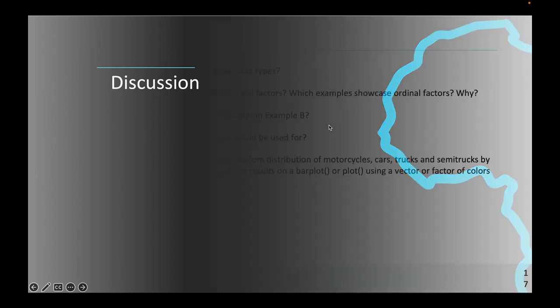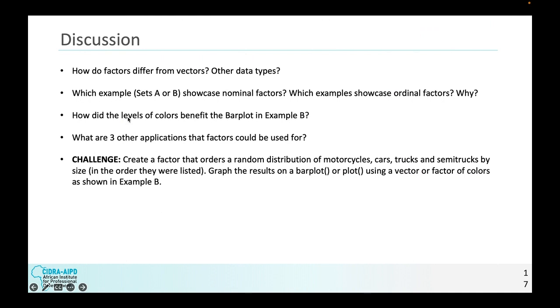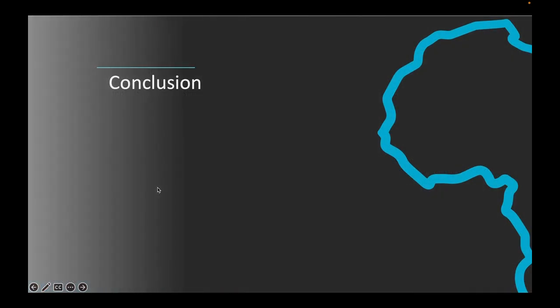Discussion. This is what we really want to take away from this presentation. First, how do factors differ from vectors and other data types? Of those, which example sets A or B showcase nominal factors? Which examples showcase ordinal factors? And why? How did the levels of colors benefit the bar plot in example B? And what are three other applications that factors could be used for that I did not cover? A little challenge that I want to show you is to create a factor that orders a random distribution of motorcycles, cars, trucks, and semi-trucks by size in the order that they were listed here. So motorcycles are smaller than cars. Then graph the results on a bar plot or plot using a vector of or factor of colors as shown in example B. That will be really great to cement understanding.